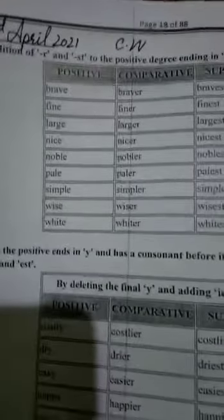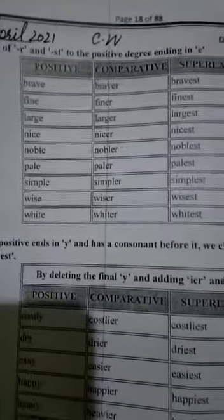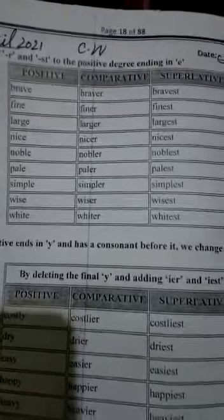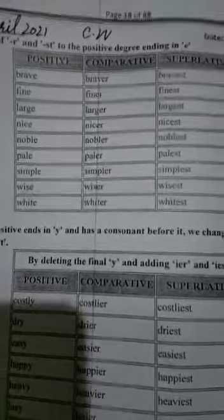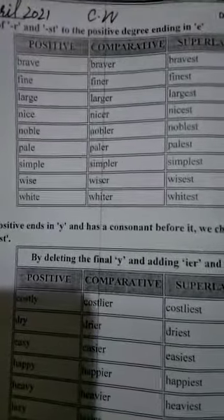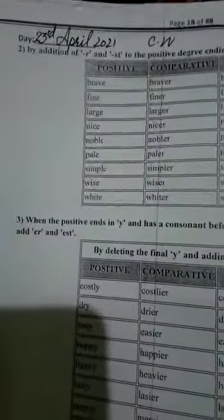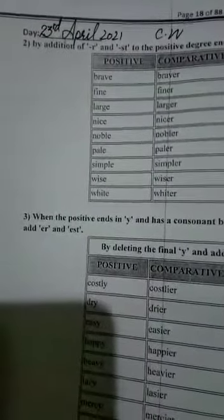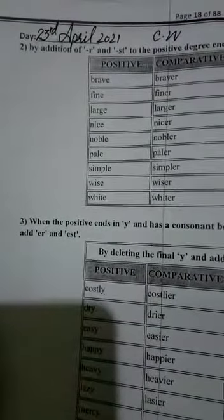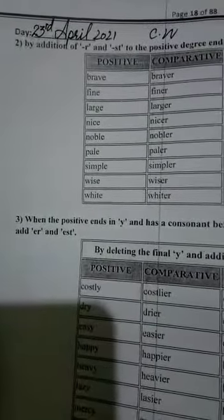First of all, you have to learn the first table. I will tell you about the rule. First exercise: by addition of R and ST to the positive degree ending in E, meaning that the words which end in E.